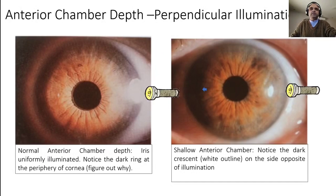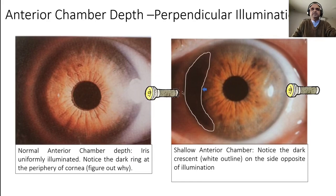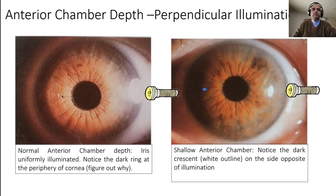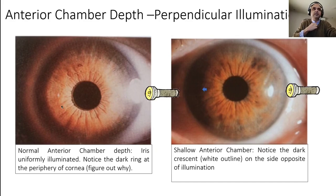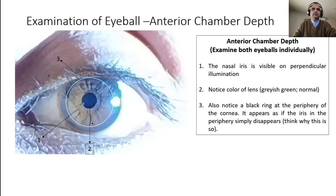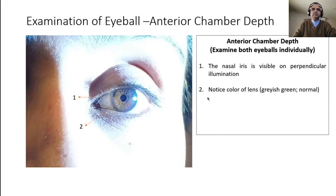To assess anterior chamber depth, hold your illuminator perpendicular to the plane of the iris and shine from the temporal side. If the iris is nice and flat, you should see the iris uniformly illuminated. If the chamber is shallow, you will see a dark crescent on the nasal side — this happens because the iris is no longer flat but bowed forward. If the chamber is deep, the iris is uniformly illuminated. If you can see all of the iris on the nasal side, the chamber is adequate; a shadow indicates a shallow chamber.